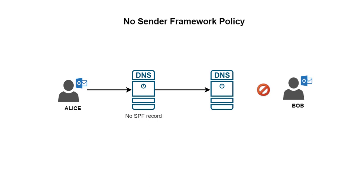How does the communication look like if there is no Sender Policy Framework defined on Alice's server? Alice's server will say: 'Hello Bob, I've got a new message from Alice to Bob.' Bob's server will say: 'Hello Alice server, what is your SPF?' Alice's server doesn't have SPF defined on the DNS records, so she'll say: 'I don't have it — trust me, it's from Alice to Bob.'